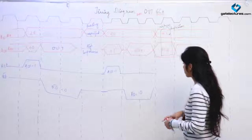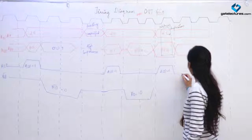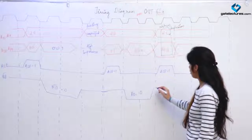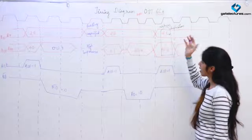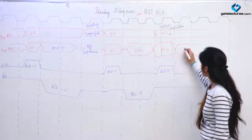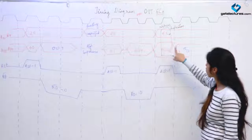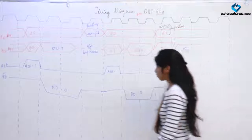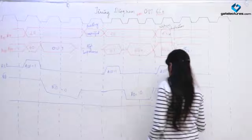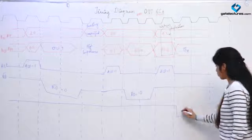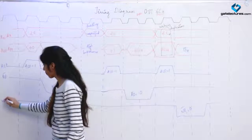Now I have got the address, ALE is again made 1 of course. Suppose the contents of the accumulator — anything you wanted to output — was 15. Now you have reached the address, you have the data, and you want to write this data. So for two clock cycles you make write-bar 0.